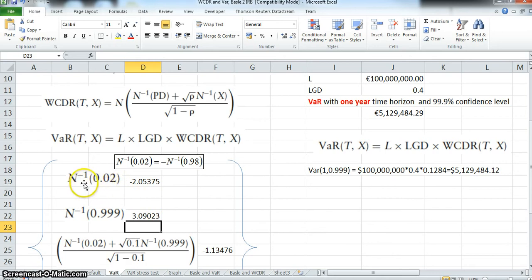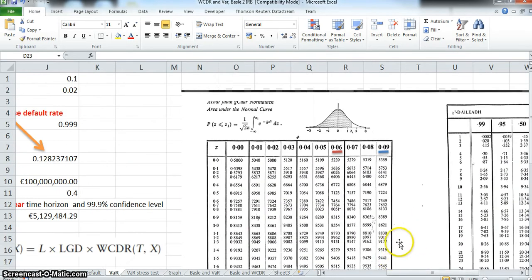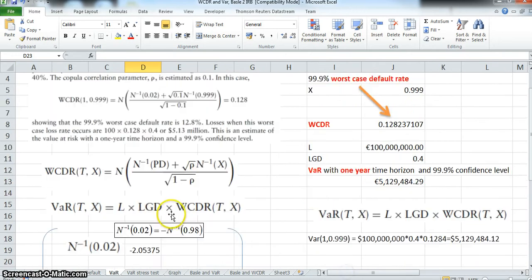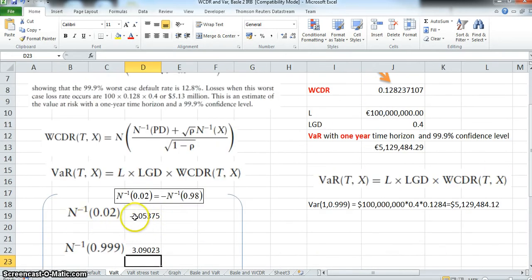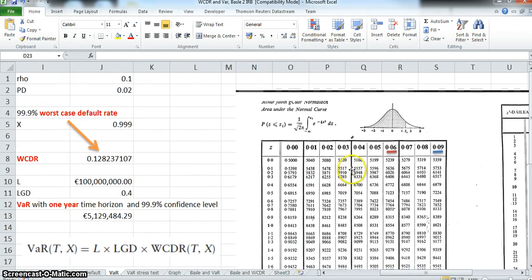However, if we were to read this value from the tables, the normal distribution tables that typically come with examinations, it's not so clear how that value might be obtained. The first problem is there are no negative values in the normal distribution table. We can see here typically this range of values, the negative range, is excluded from the tables. The minimum value starts at this point here, zero, and the minimum value going back is 0.5. So the minimum value we start from is zero, but we're looking for NORM.S.INV of 0.02, and that cannot be read directly from the tables.